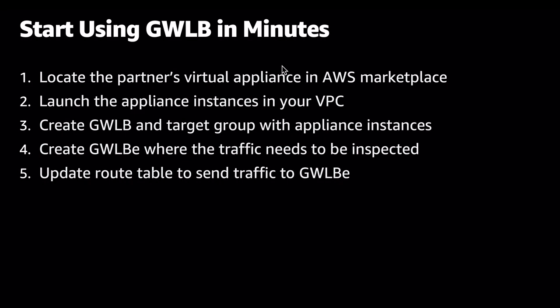We'll then create the Gateway Load Balancer in that security VPC along with a target group, and register the appliance instances to be targets for the Gateway Load Balancer. For traffic that needs to be inspected from a spoke VPC where application instances reside, we will create the Load Balancer endpoint in that VPC. And to get traffic to be inspected, we'll update the route table to send all traffic to the Gateway Load Balancer endpoint before it egresses out to the internet.